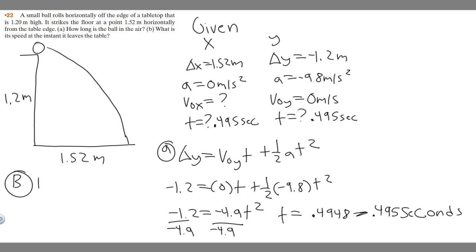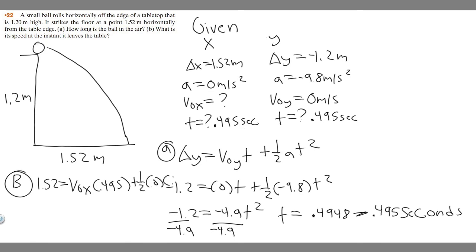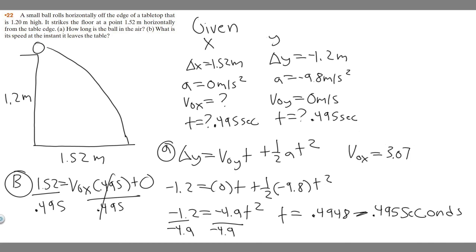Using the x-direction equation: delta x equals v sub 0x times t plus one-half times a times t squared. So 1.52 equals v sub 0x times 0.495 plus one-half times 0 times 0.495 squared. Since a equals 0, the second term drops out. So 1.52 equals v sub 0x times 0.495. Dividing both sides by 0.495, v sub 0x equals 1.52 divided by 0.495, which gives 3.07 meters per second. That's the answer to Part B.